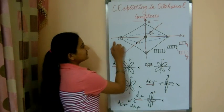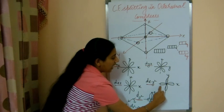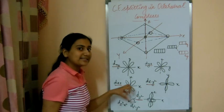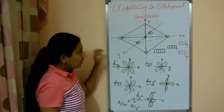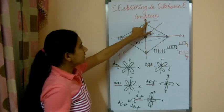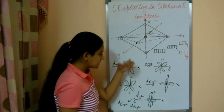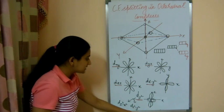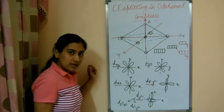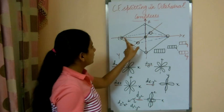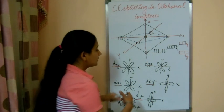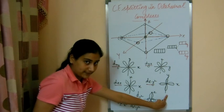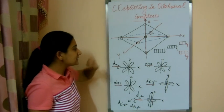Moving to the other two orbitals: for the ligands along the x-axis, we can see there are lobes along the x-axis in both of these orbitals, so they will experience more field because of these ligands. For the ligands along the z-axis, these orbitals have lobes along the z-axis and will experience more effect. Similarly for the y-axis. So these two orbitals experience more field from the ligands compared to the other three.